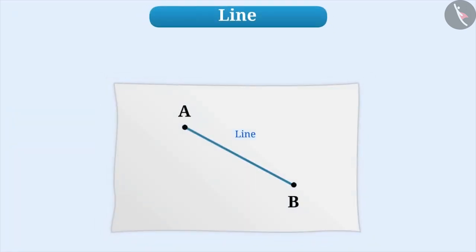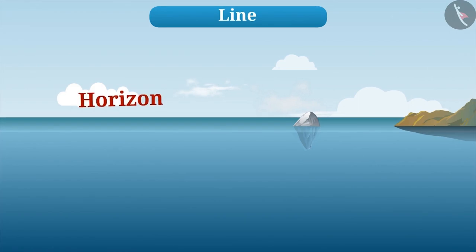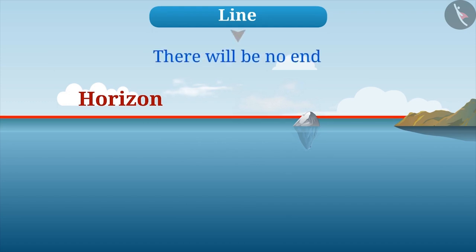Now let us learn what is a line. If we extend both sides of a line segment without any end, then we get a line. On the horizon, where the sky and the earth meet, you must have seen a line. There is no end to a line.